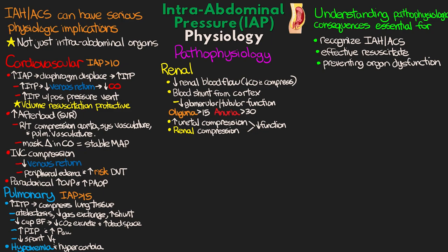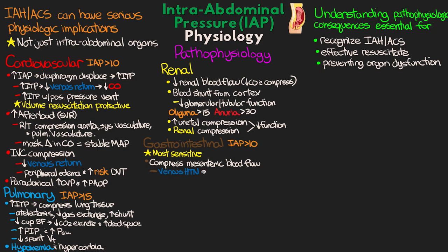Now let's move on to the gastrointestinal system. The GI system is really the most sensitive to changes in intra-abdominal pressure. We have compression of mesenteric blood flow, noted with pressures even just greater than 10. Compression of the mesenteric veins leads to venous hypertension and ultimately intestinal edema. This can be further exacerbated by large volume fluid resuscitation — greater than 3 liters — as well as disorders that result in capillary leak. The swelling of the intestines can further raise intra-abdominal pressure, leading to a feedback cycle that further exacerbates the problem.